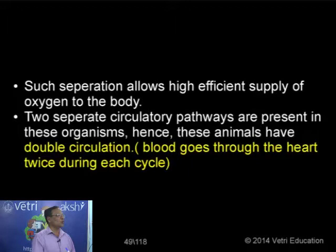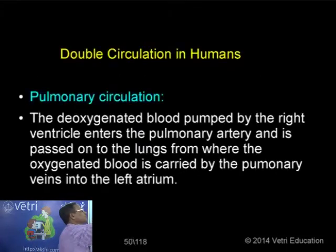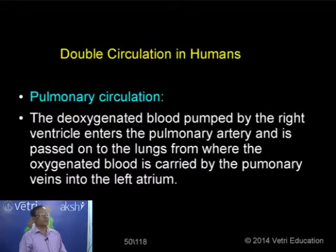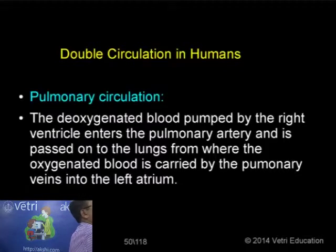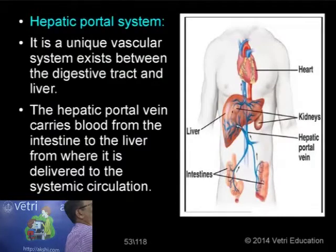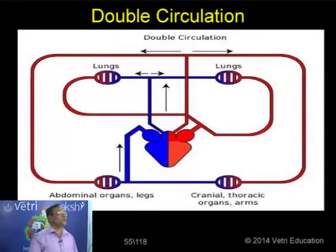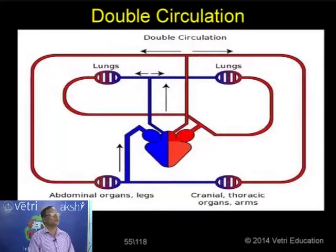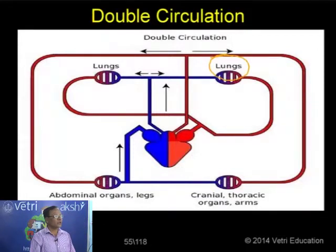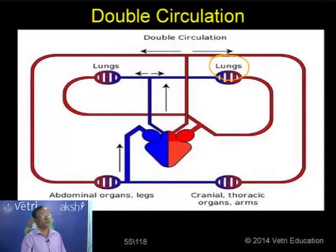Double circulation in humans: there are two separate circulating systems. One is called pulmonary circulation, where the lungs are involved. Another is called systemic circulation, where different parts of the body are involved. Heart and lungs together constitute pulmonary circulation. Heart and other body parts together constitute systemic circulation. The right atrium receives impure blood, which is pumped into the right ventricle. Pulmonary circulation starts from the right ventricle.